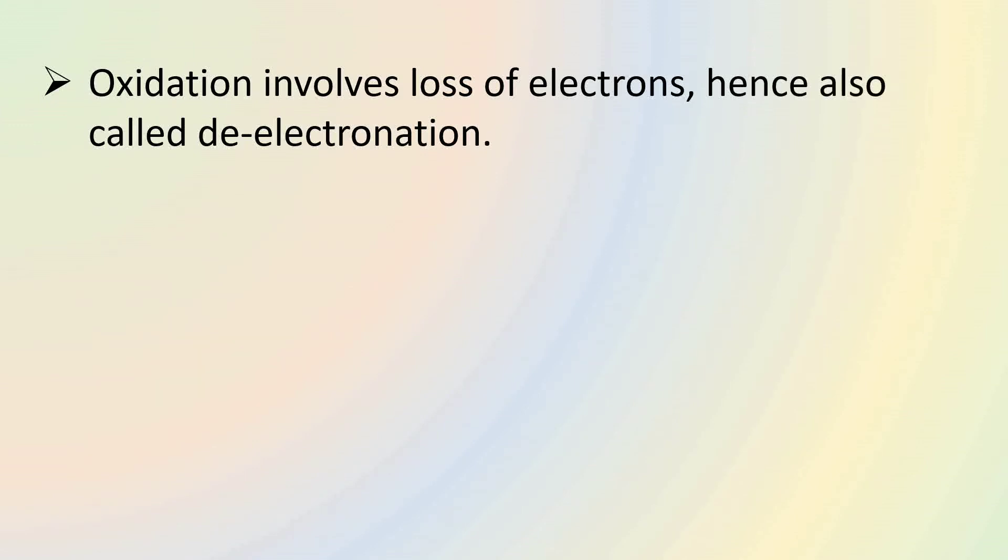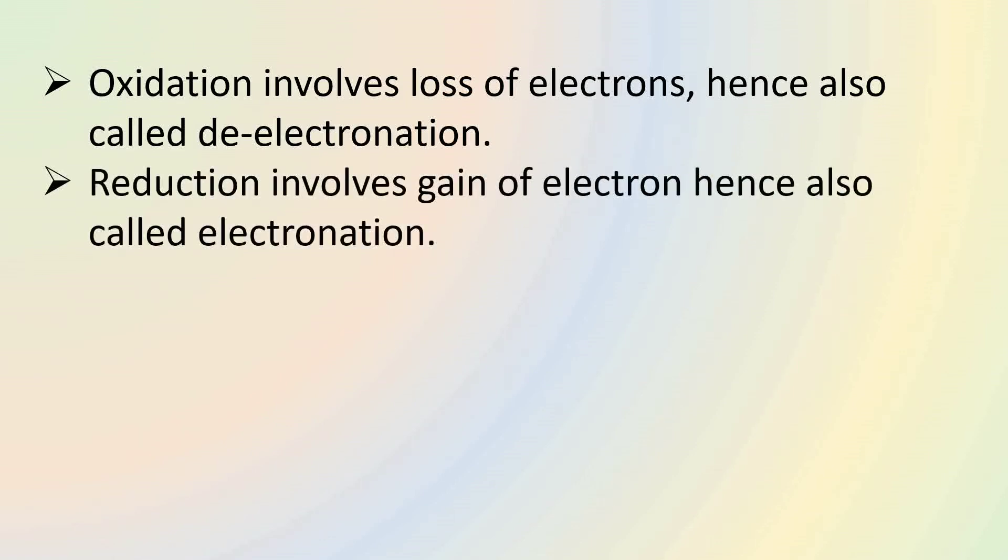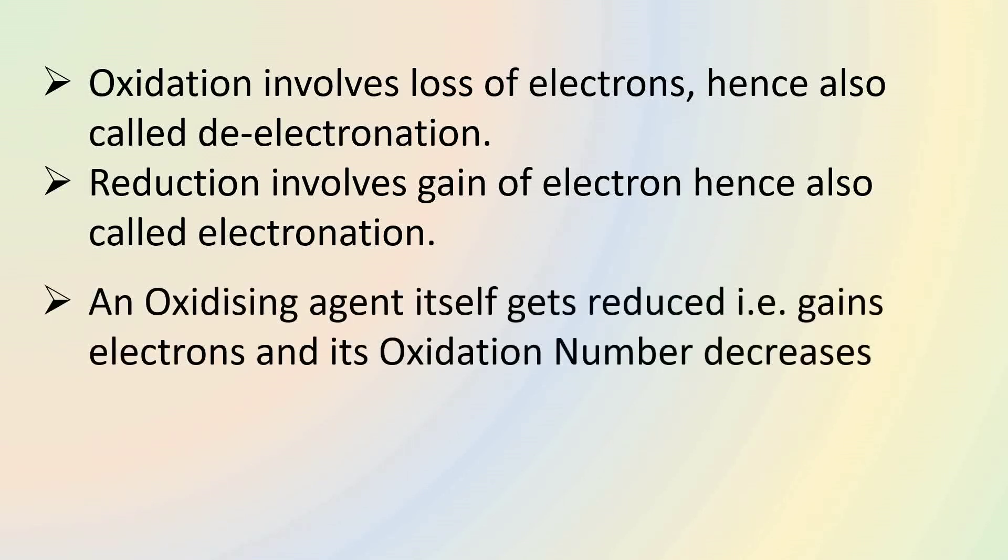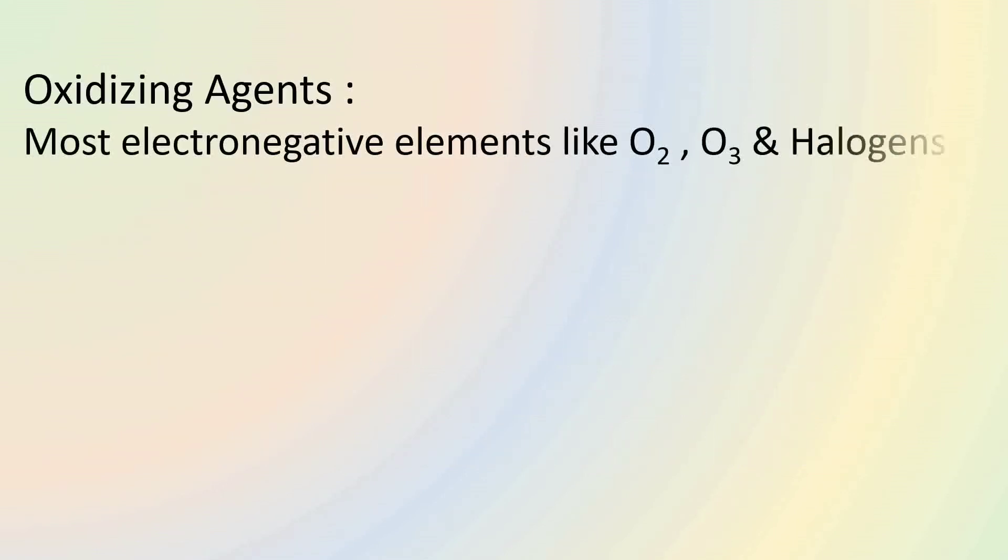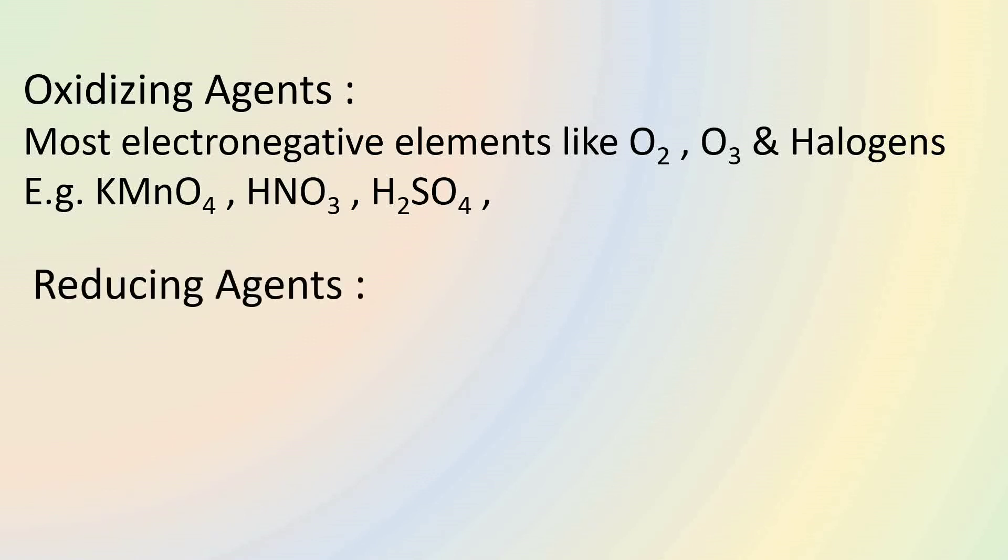Let's understand what oxidation and reduction mean. Oxidation is the process that involves loss of electrons, which is also called de-electronation. Whereas reduction is the process that involves gain of electrons, hence which is also called electronation. An oxidizing agent is the one which gets reduced by gaining electrons, where its oxidation number decreases. A reducing agent is the one which gets oxidized by donating electrons and whose oxidation number increases. Most electronegative elements are oxidizing agents. The examples of oxidizing agents include potassium permanganate, nitric acid and sulfuric acid. All metals like sodium, zinc, iron are reducing agents. Other examples of reducing agents include H2S, FeSO4, etc.